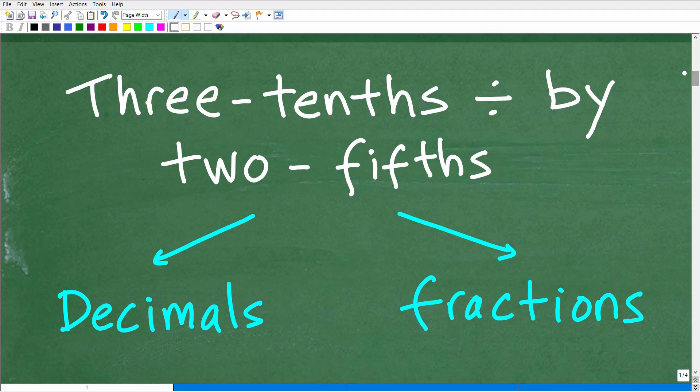So first of all, we need to recognize that we're dealing with decimals and fractions. So this right here is three-tenths. Now if you just say this out loud, three-tenths, what does that sound like? Does that sound like a fraction or a decimal? Well, actually, you can think of it in both ways. You could write three-tenths as a decimal or you could write it as a fraction.